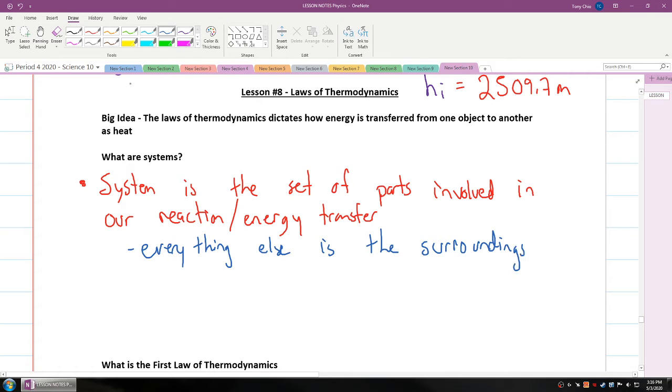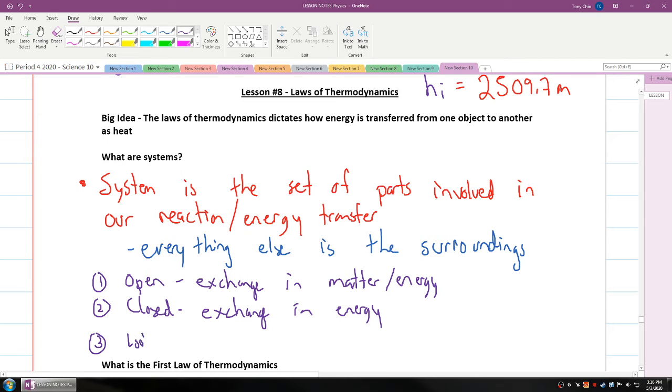It's important to remember three different types of systems we have. We have an open system, which means there's an exchange in matter and energy with the surroundings. We have a closed system, which is just an exchange in energy. And then we have an isolated system, which is no exchange.